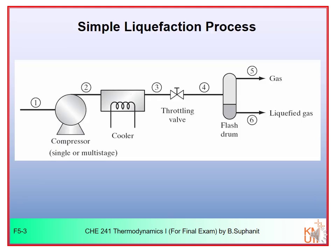The simple liquefaction process consists of three main steps. The first is compression — using a single stage or multi-stage compression. Normally we do multi-stage compression with intercooling, which requires much less work than a single compression step. Once compressed to high pressure, we cool the gas using a cooler.